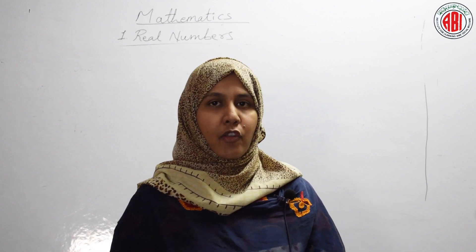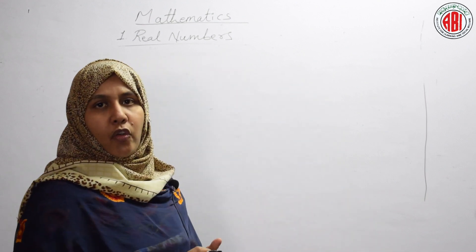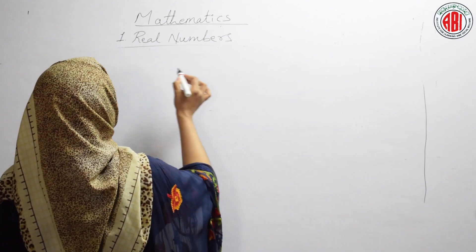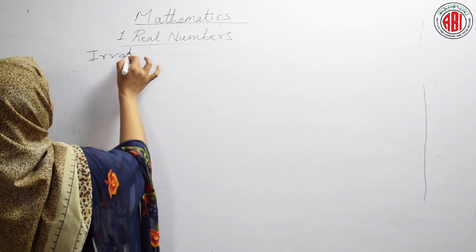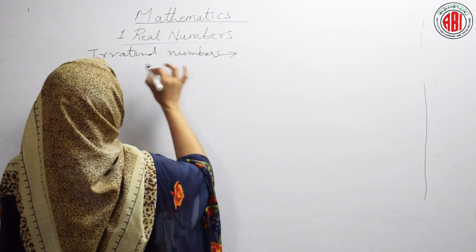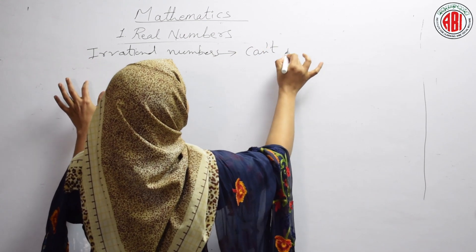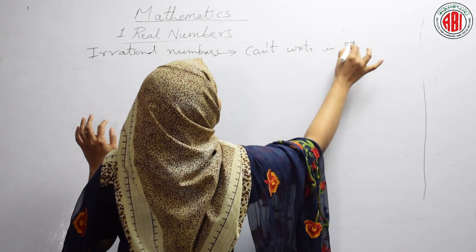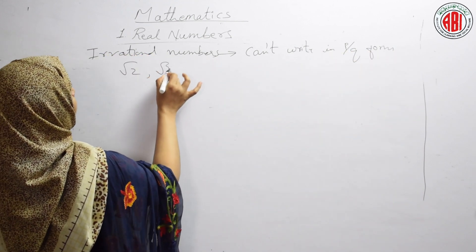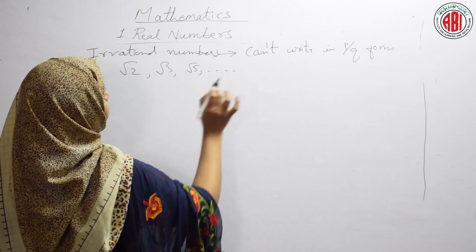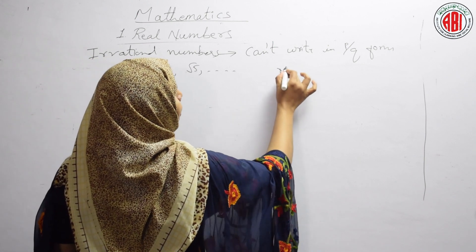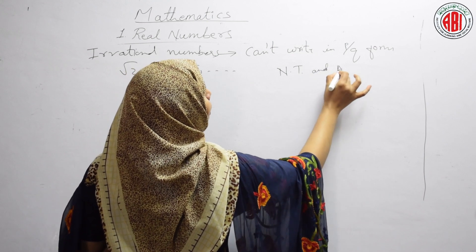Now we will do problems based on irrational numbers. As we all know, irrational numbers are numbers that cannot be written in P/Q form. Irrational numbers have one type of decimal representation: non-terminating and non-recurring decimal.